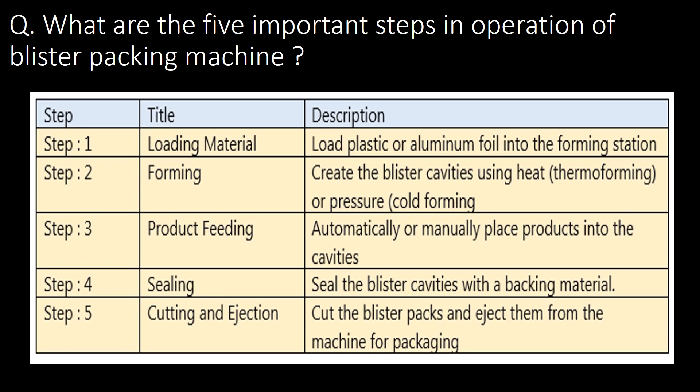What are the five important steps in operation of a blister packing machine? Step 1 is loading of material — here we load plastic or aluminum foil into the forming station. Step 2 is forming — here we create the blister cavities using heat or pressure. Step 3 is product feeding — automatically or manually we place the products into the cavities.